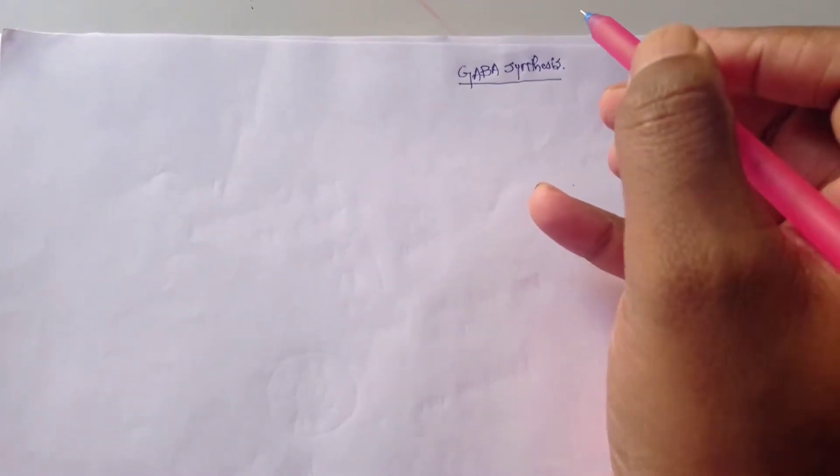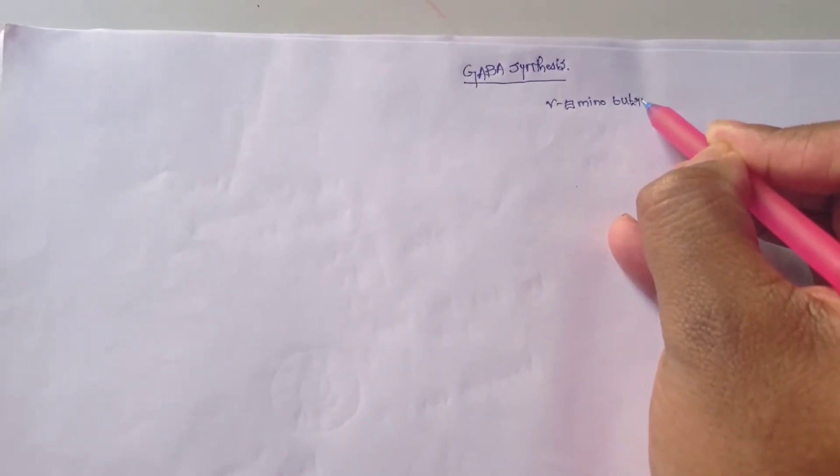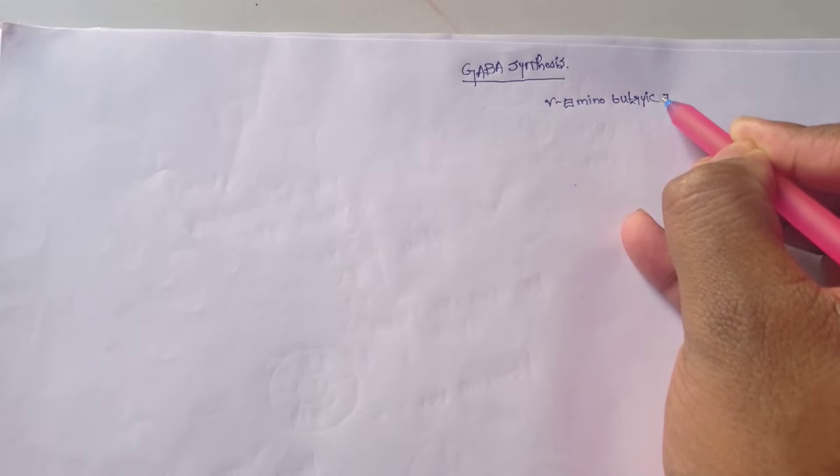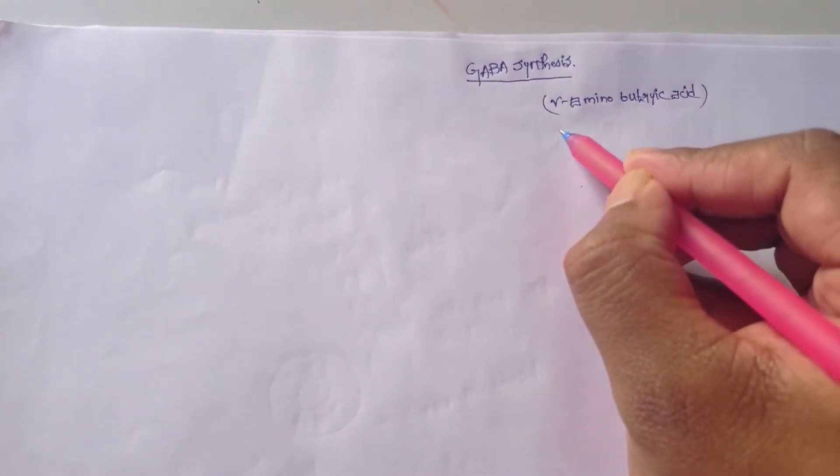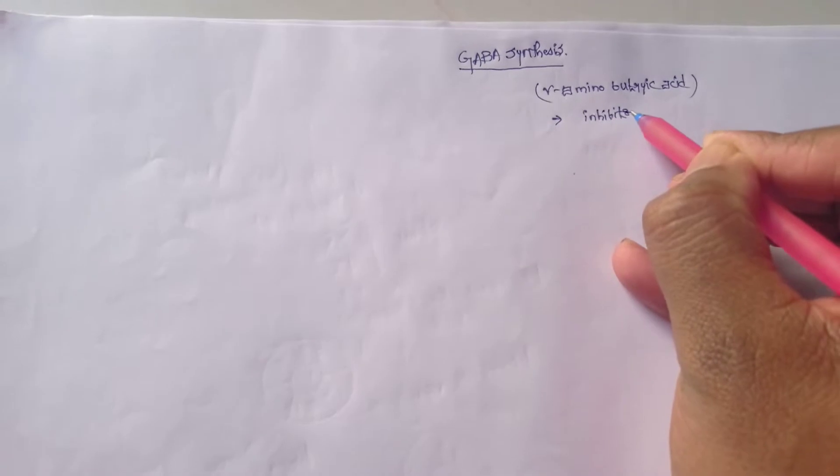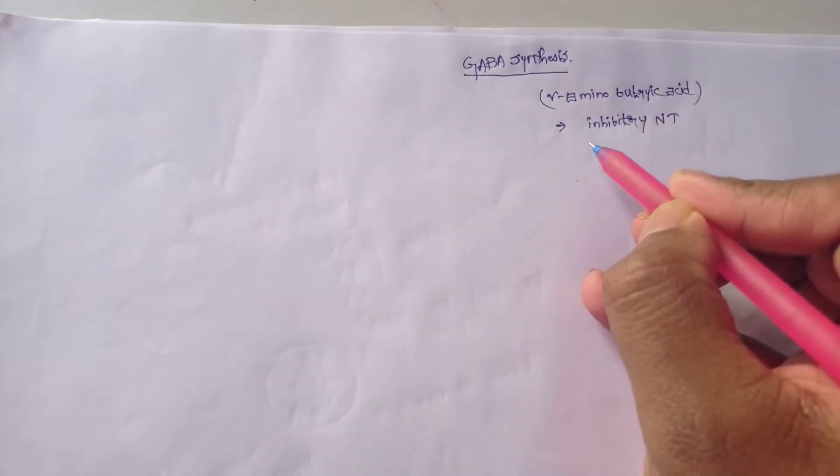GABA, gamma-aminobutyric acid, is an inhibitory neurotransmitter. This is the structure of GABA.